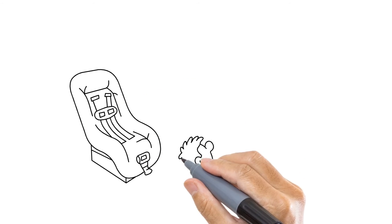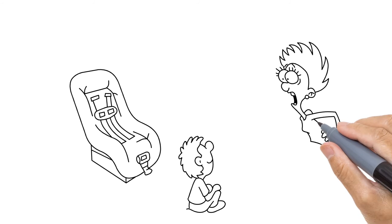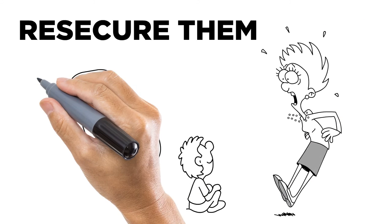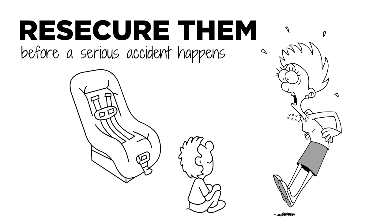Finally, if your toddler happens to wiggle out of their seat, it will alert you. This way you can immediately re-secure them into their seat before a serious accident happens.